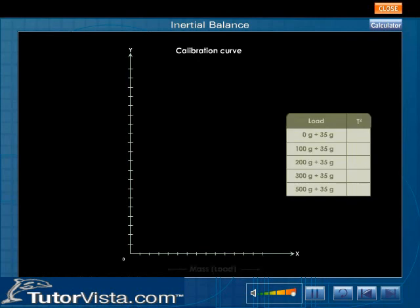Plot a graph by taking load along the x-axis and time period squared along the y-axis. We obtain a straight line graph showing that mass is directly proportional to period squared. This graph is known as the calibration curve.